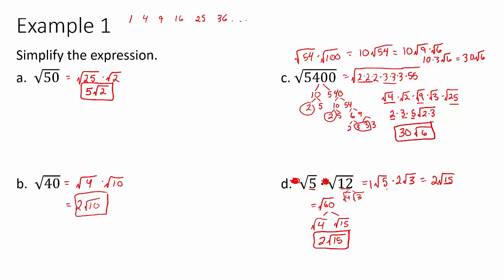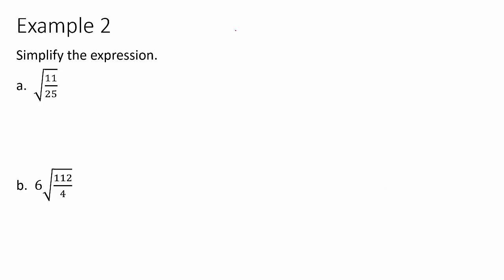Now let's look at some fractions. We use the property that lets us split a square root into a numerator radical over a denominator radical. Before doing that, it helps to check if the fraction simplifies normally. For √(11/25), 11 over 25 doesn't simplify, so we split: we don't have a square root of 11 since it's prime, but the square root of 25 is 5, giving √11 / 5 as our answer.